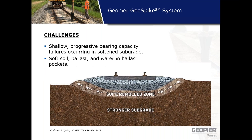Ballast fouling can be caused by several mechanisms — one being abrasion of the aggregate particles due to dilation of the rock particles during dynamic loading from rail traffic, and the dust created during particles rubbing against neighbors. Another mechanism of fouled ballast is soft subgrade below the ballast section, which can result in shallow progressive bearing capacity failures within the zone between the ballast and the original subgrade, and ballast pockets consisting of soft soil mixed with ballast and rock particles, usually accompanied by water.